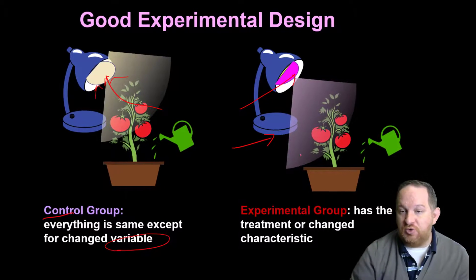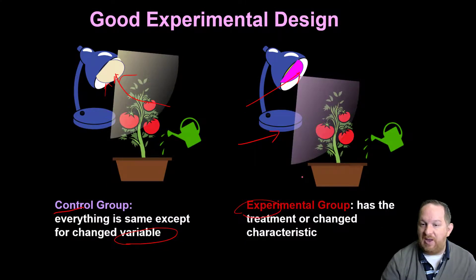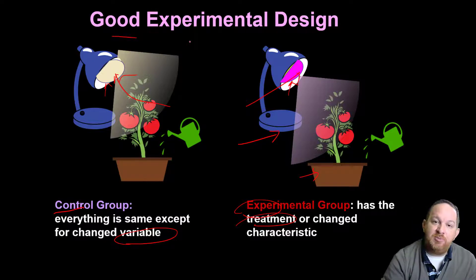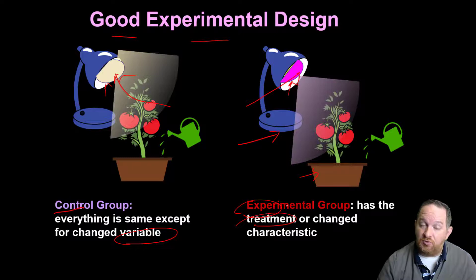Then the experimental group is the one we experimented on. We're using a different light, or different light color. We're using the red and blue light. And so this we can also call the treatment group. We applied the treatment, in this case the light color change, to this group. So a good experimental design is going to have control and an experimental group.